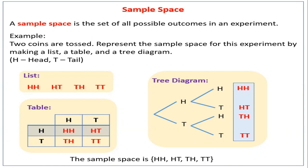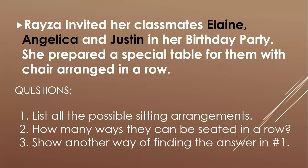In listing, we have: head-head, head-tail, tail-head, and tail-tail. In a table, we have the same: head-head, head-tail, tail-head, tail-tail. In a tree diagram, we also get head-head, head-tail, tail-head, and tail-tail. The sample space is {HH, HT, TH, TT}.